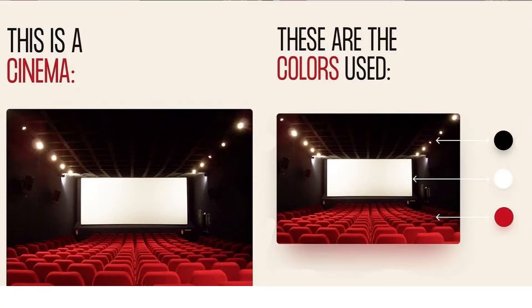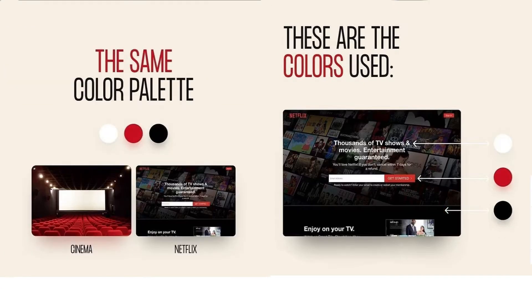Black is mostly dark, and you can see white. This is the three major colors for Netflix. Netflix's primary and secondary colors are red, white, and black.